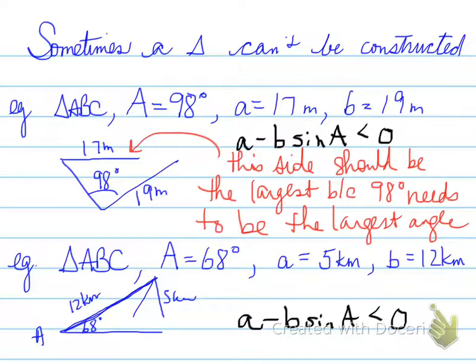A minus B sine A was less than 0. We can't have two floating triangles. Confusing folks. Basically, the reason is A minus B sine A is actually less than 0, and because it's less than 0, there are no triangles that can be drawn.